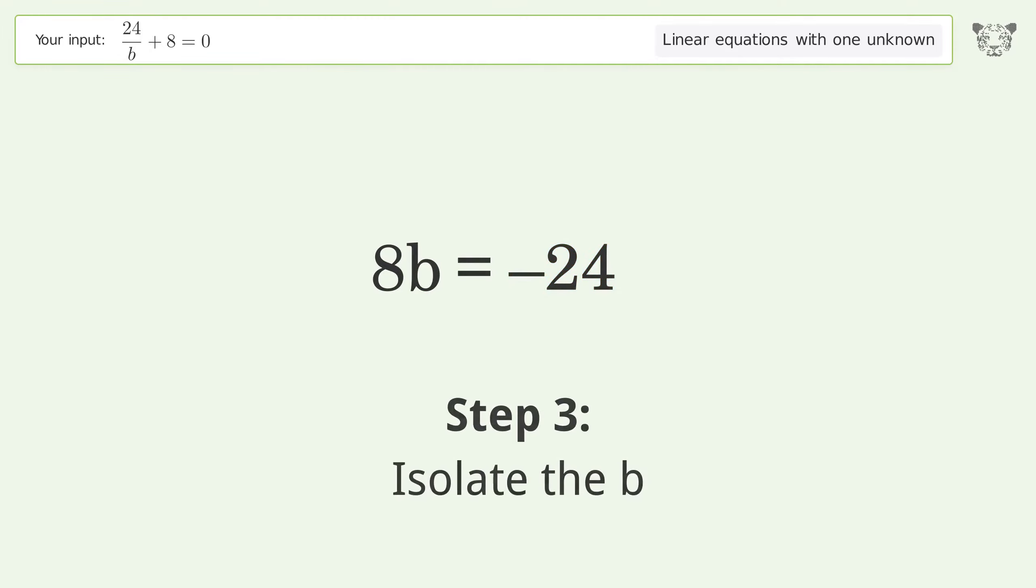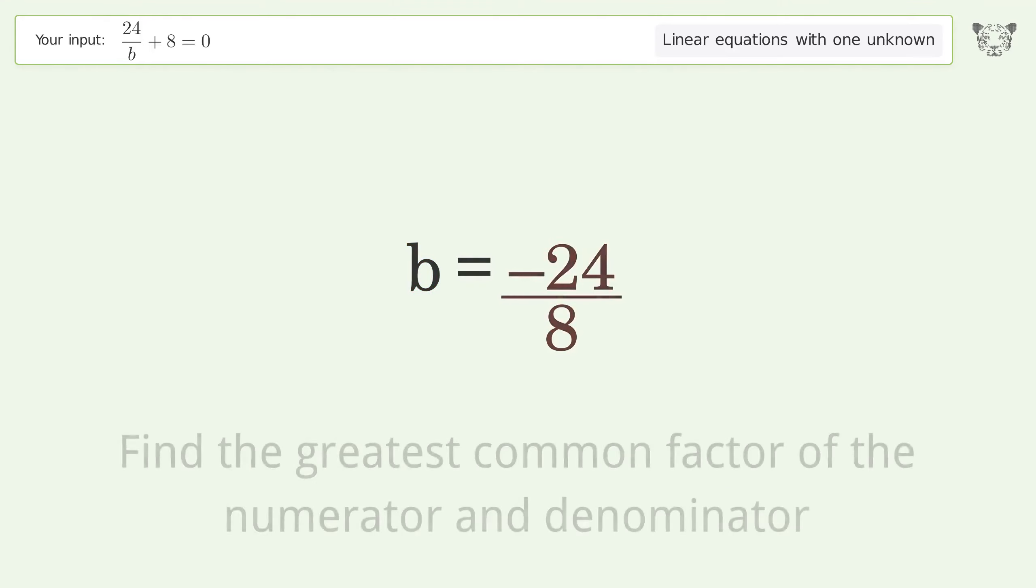Isolate the b. Divide both sides by 8. Simplify the fraction. Find the greatest common factor of the numerator and denominator.